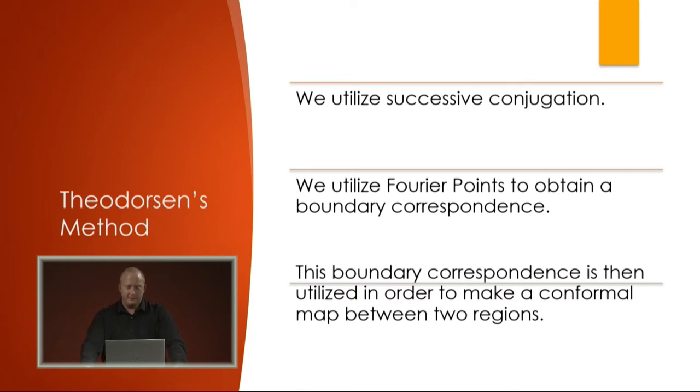In Theodorsen's method, it's a method of successive conjugation. You use Fourier points to obtain a boundary correspondence, and then once you have this boundary correspondence, you can make a conformal map between two regions and also map things like streamlines between the two domains.